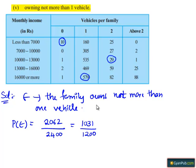the probability that the chosen family owns not more than one vehicle is 1031 whole divided by 1200.